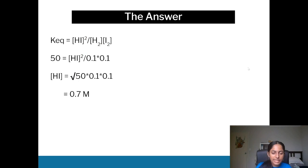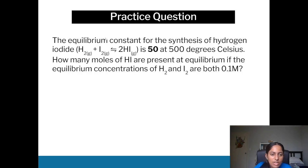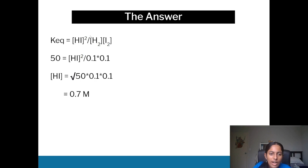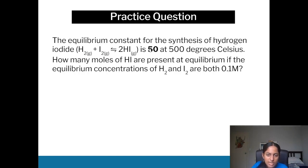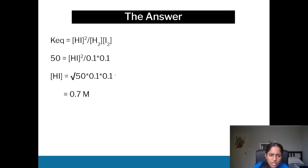If we go back to the equation, Keq is products over reactants and then whatever number is at the front becomes a power. So in this case it'll be HI squared over H2 and I2. They've already given the equilibrium concentrations for these two, so we just sub it in. Therefore it will just be HI squared over 0.1 times 0.1, and they've given the equilibrium constant as 50, so therefore we have 50 over here.